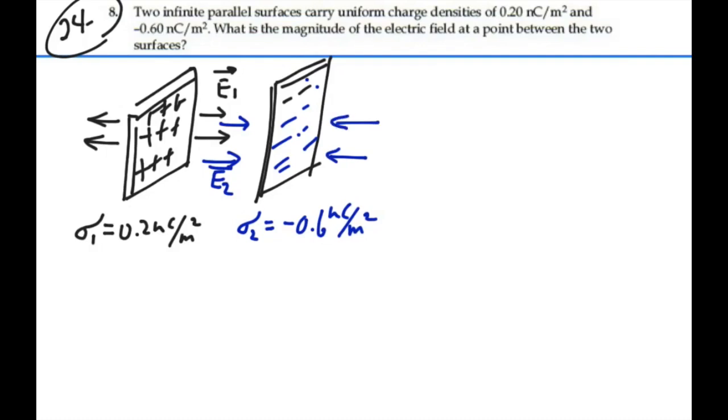In the vicinity where these two fields are between the two sheets, these fields are actually going to be in the same direction. So we're actually going to have a situation where E1 is going, as I've drawn it, to the right, and E2 will also be going to the right between these two sheets. So we just have to find the magnitude of these two fields and add them together, and then we will get the total field in between these two sheets.